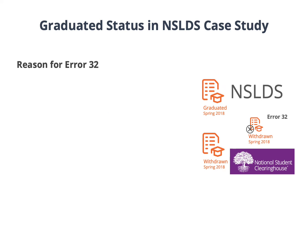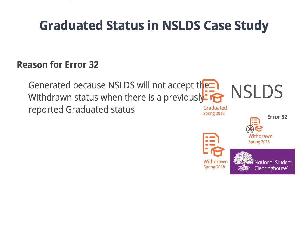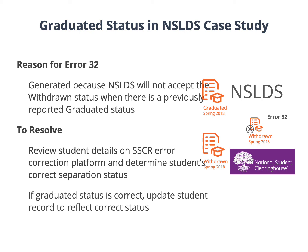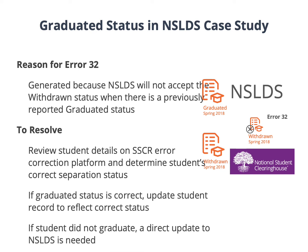NSLDS will not accept a record with a withdrawn status since there is a previously reported graduated status. To resolve the error, first review the student's record through the SSCR error correction platform and determine what the student's separation status is at your school. If the student did graduate, use the SSCR error correction platform to update the student to reflect the correct graduated status and the effective date for the graduated status. If the student did not graduate, a direct update to NSLDS will be needed. Since NSLDS will not accept the withdrawn status from the clearinghouse, another direct update to NSLDS is needed to successfully report the withdrawn status. After updating NSLDS with the withdrawn status, wait at least 24 hours and then do the same update in our system. This will help to prevent the Error 32 from coming up again for the first scenario we discussed.